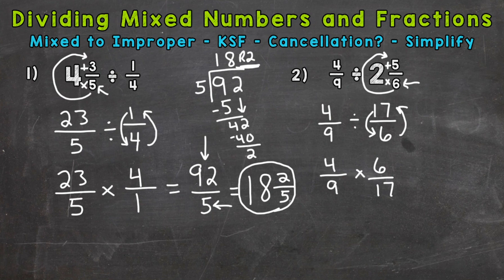Because 6 and 9 have a common factor of 3. So let's divide 6 and 9 by 3. 9 divided by 3 is 3. 6 divided by 3 is 2. 4 and 17 do not have any common factors other than 1, so we cannot use cancellation with those numbers. So we are ready to multiply straight across.